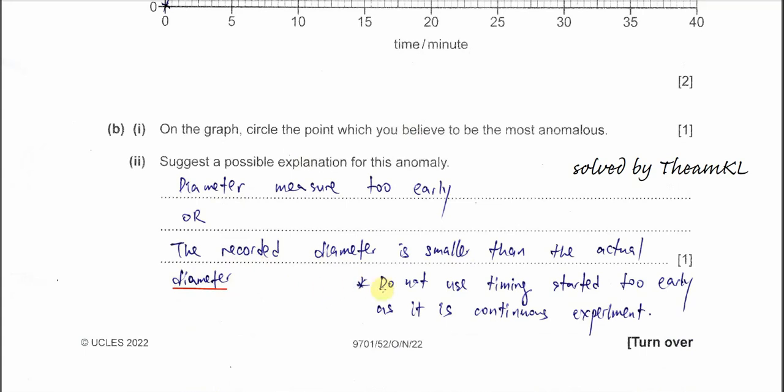This is the most common thing that students do. Do not use timing start too early, because this is a continuous experiment, 3 minutes each time, non-stop. If timing starts too early, then it will affect all readings. Therefore, don't use this. Just use diameter measured too early, the diameter measured for the 18 minutes.